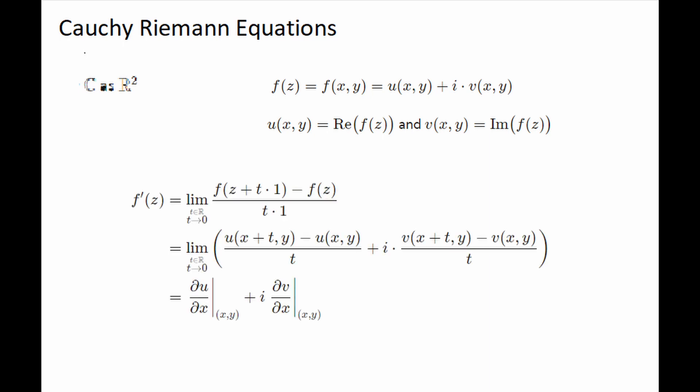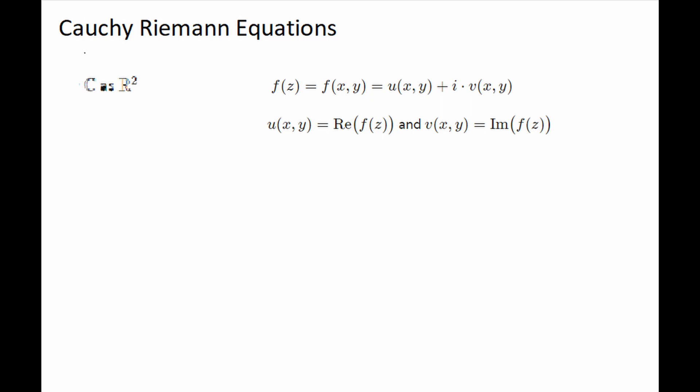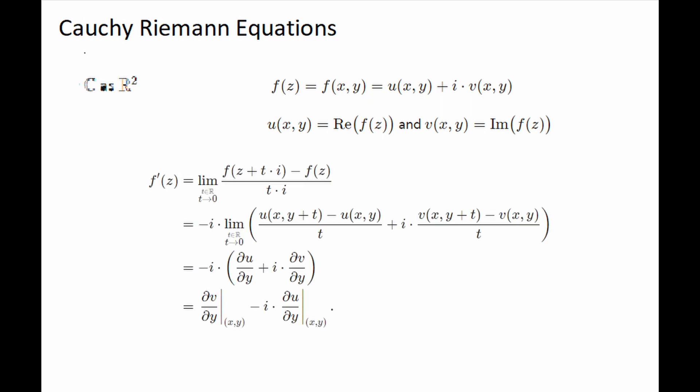Coming to the Cauchy-Riemann equations. Say we view the complex plane as a two-dimensional real surface. Then x plus iy would become coordinates, and so a complex function would be split into real and imaginary parts. Applying the differentiability condition, the real part we get ∂u/∂x plus i ∂v/∂x. Similarly, applying the differentiability condition on the imaginary part, we get ∂v/∂y and i ∂u/∂y.